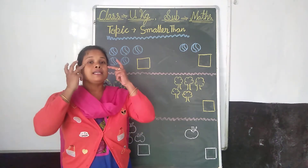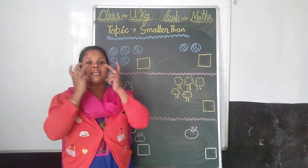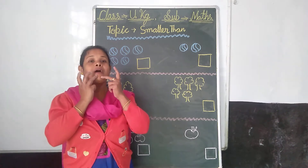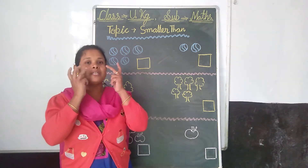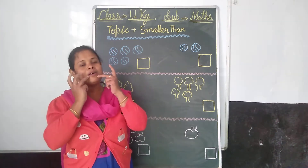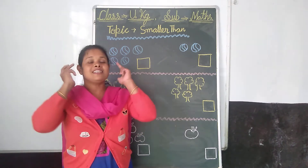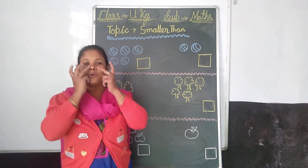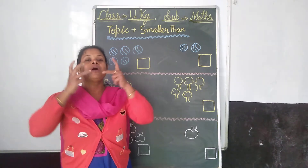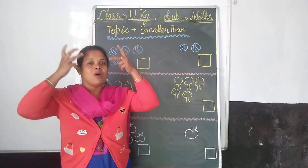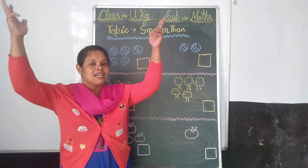Say: eyes and ears and nose and mouth, nose and mouth, nose and mouth. Eyes and ears and nose and mouth — all belongs to God.